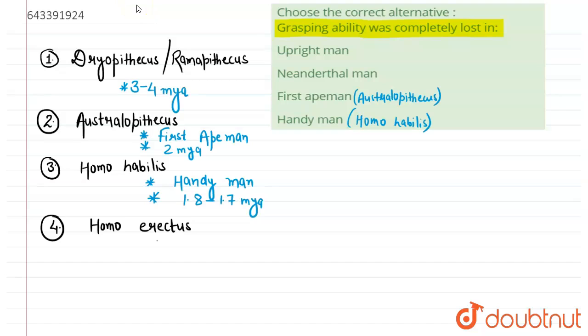As the name itself suggests, erectus means erect or upright. And they are supposed to be lived here before 1.5 million years ago. So erect or upright men are Homo erectus.